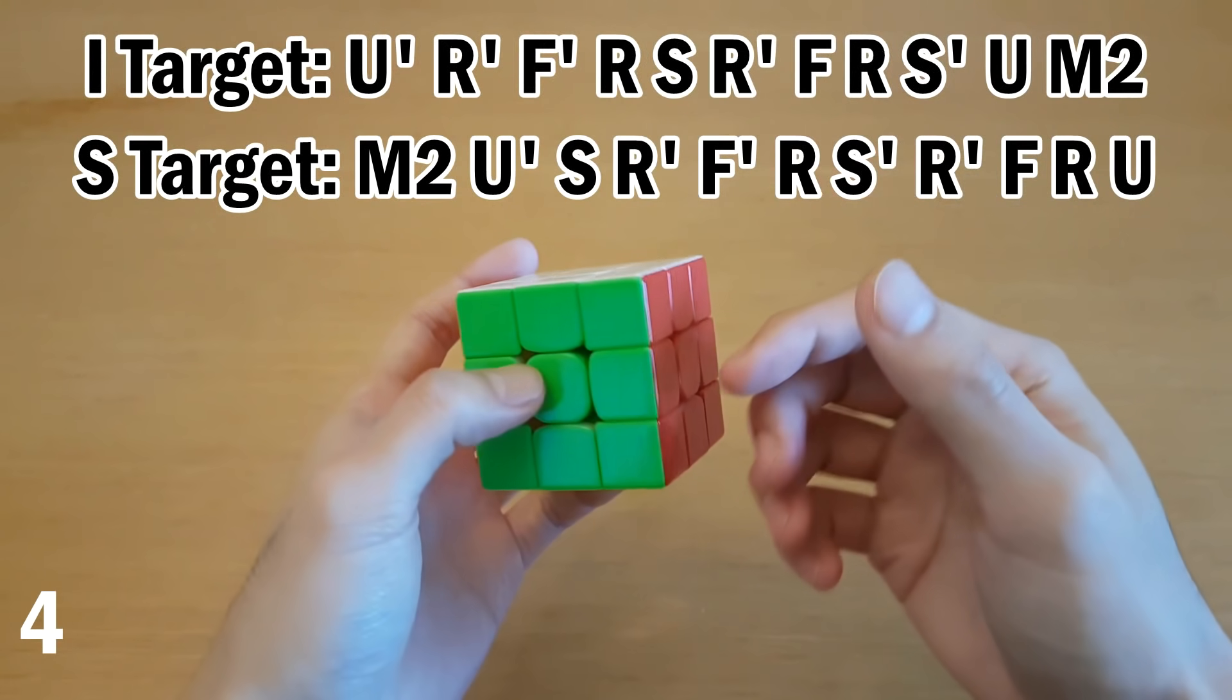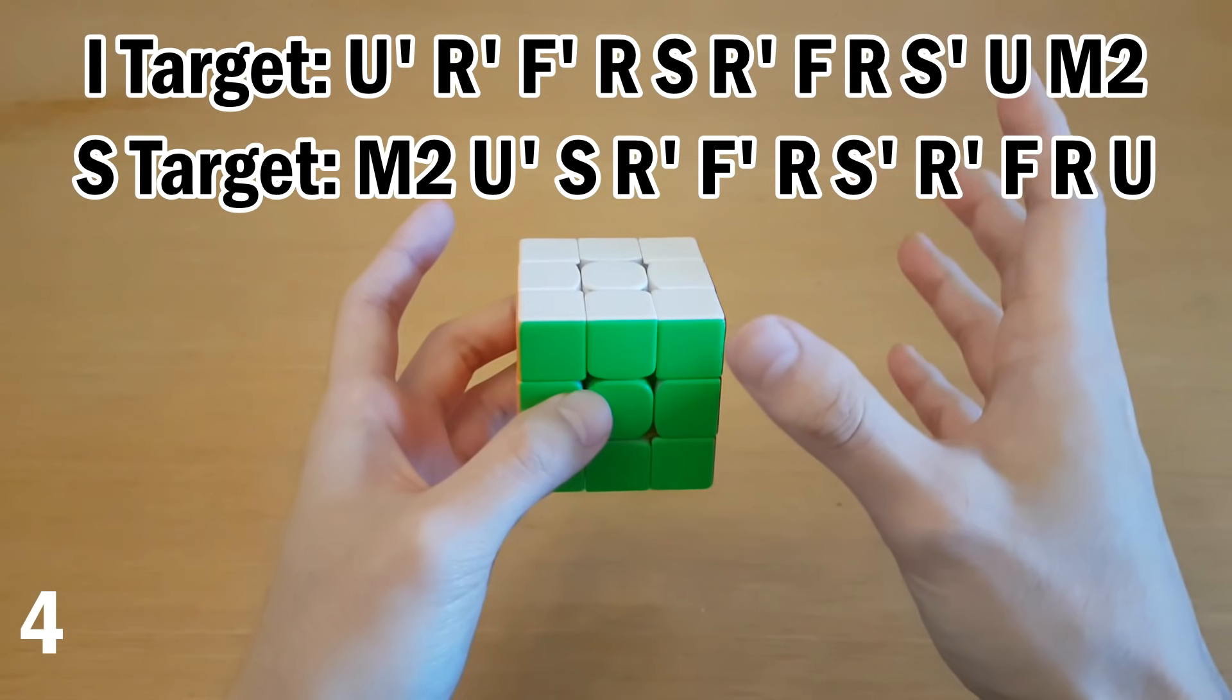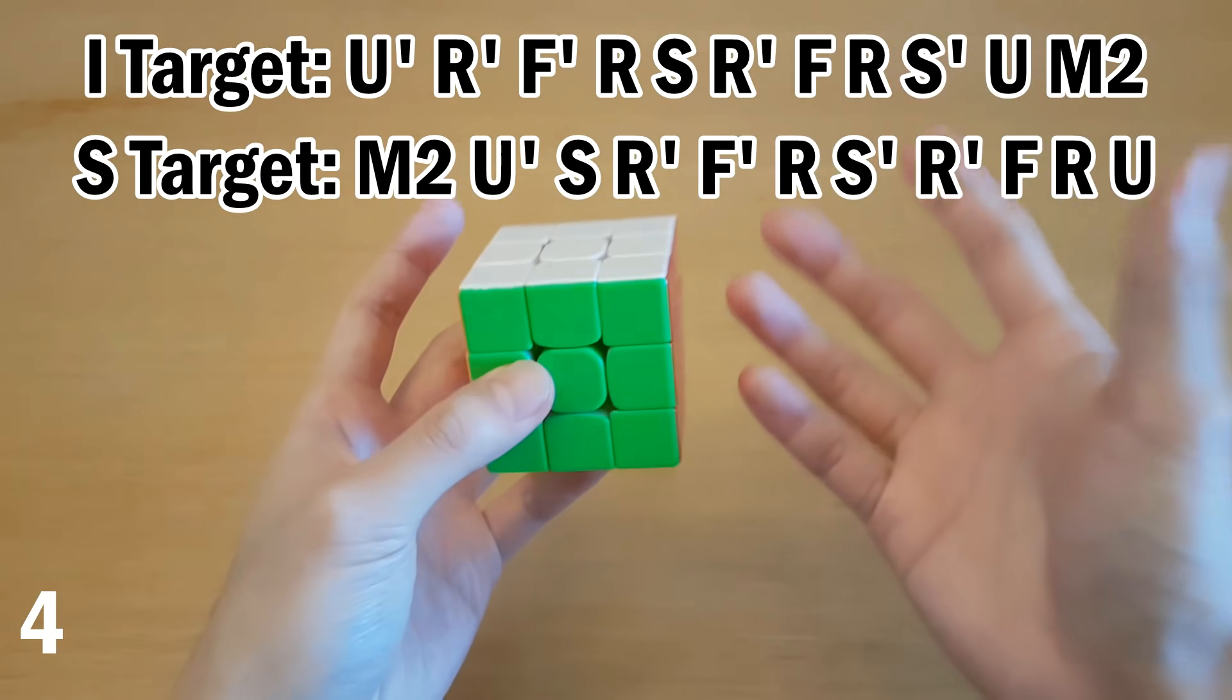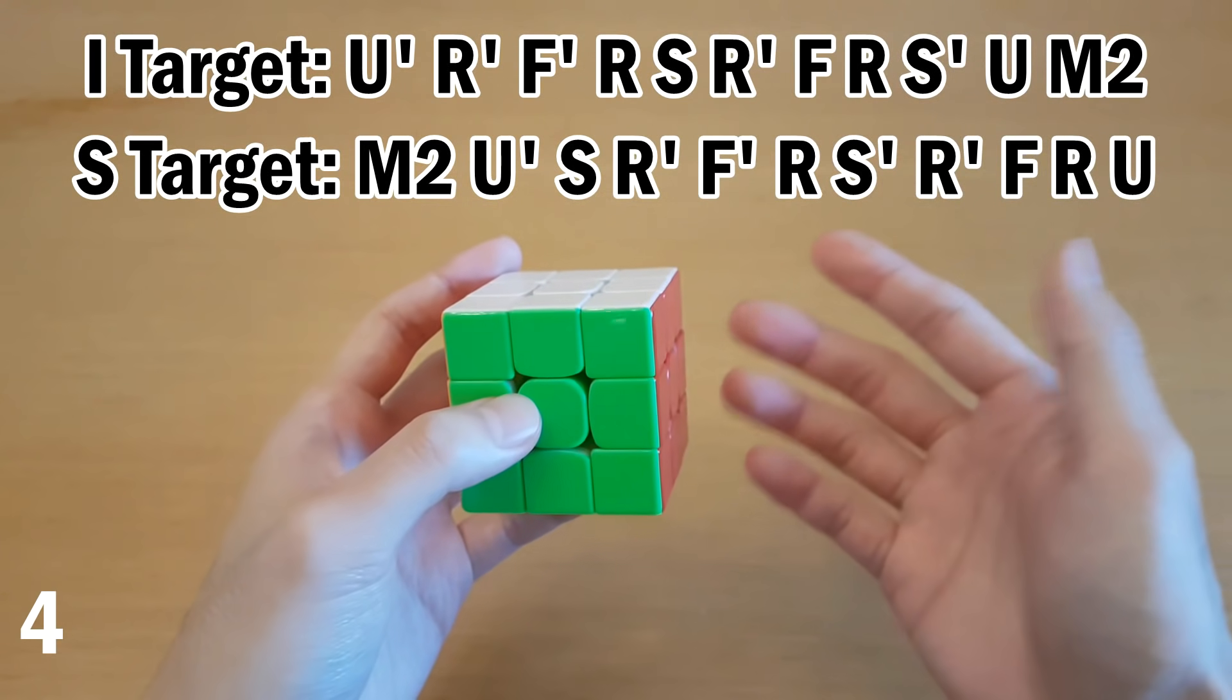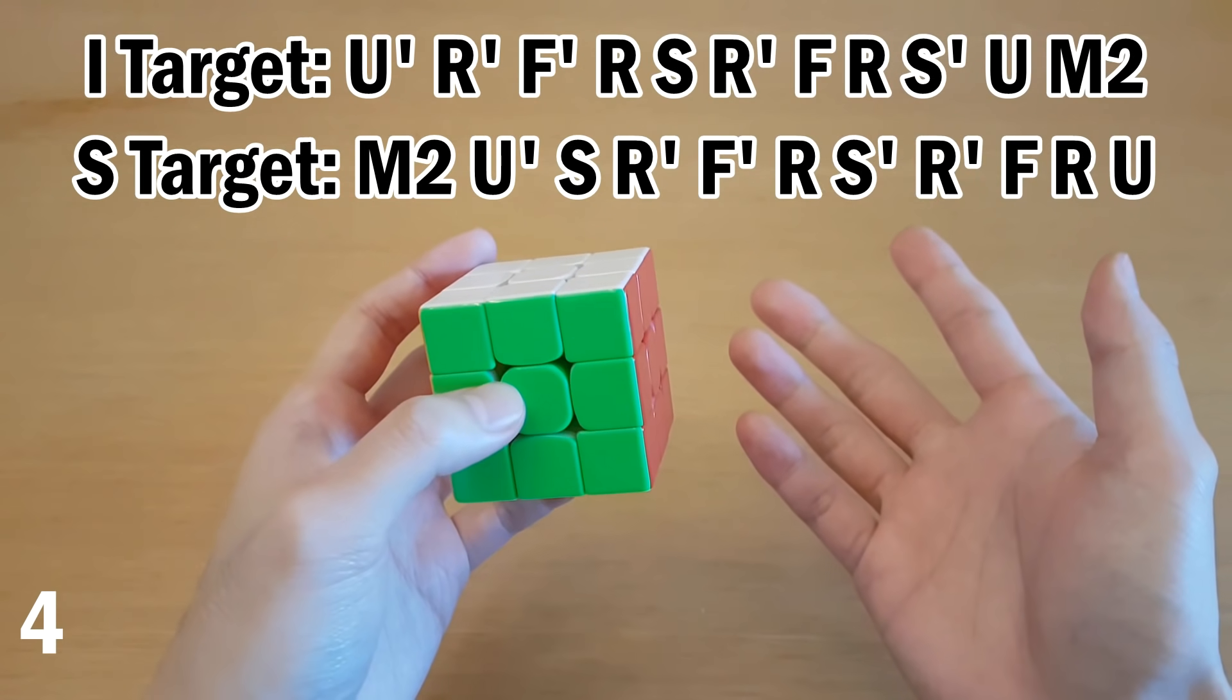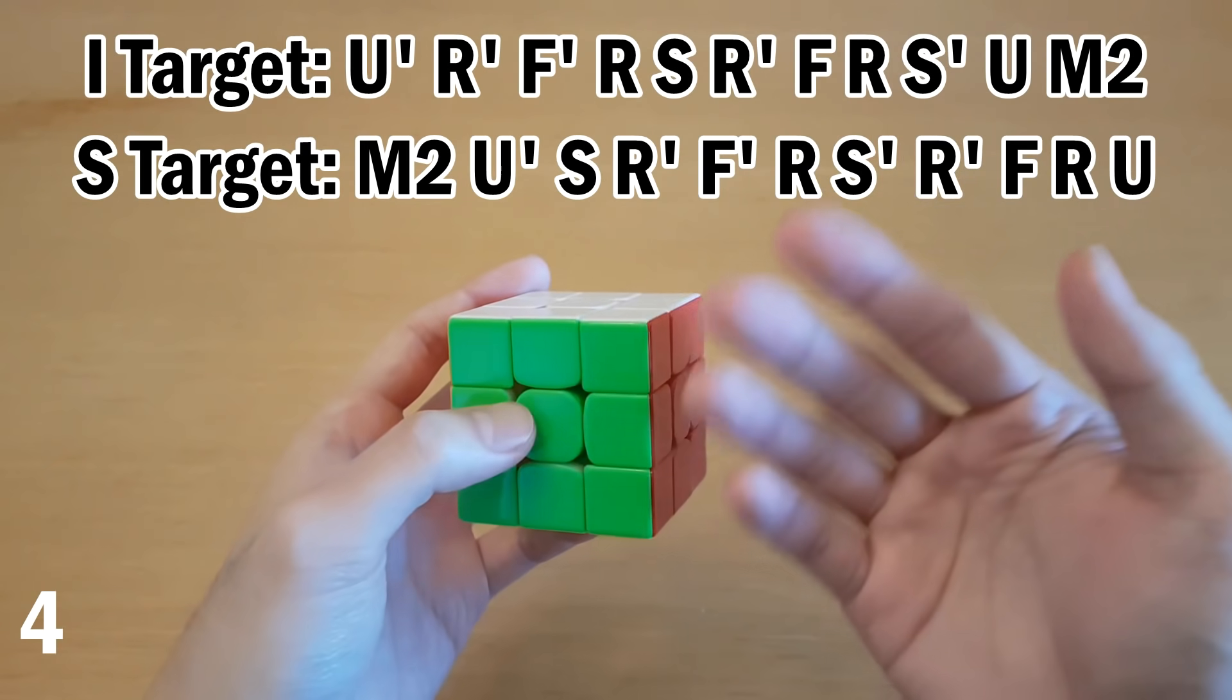So these are slightly shorter and also don't have re-grips, so they're just better algorithms, and besides that, they work exactly the same way. So if I or S comes first in a letter pair, you do the algorithm, but if it comes second, you do the algorithm for the other one.